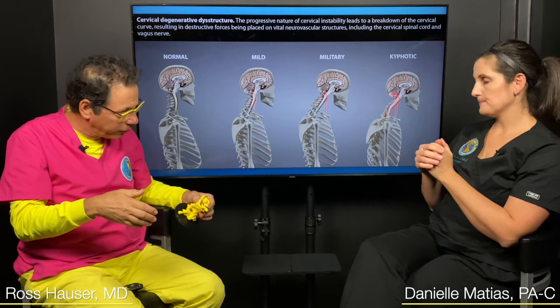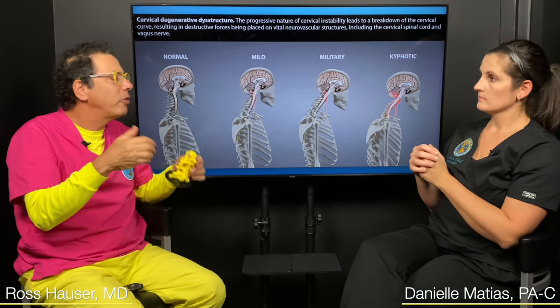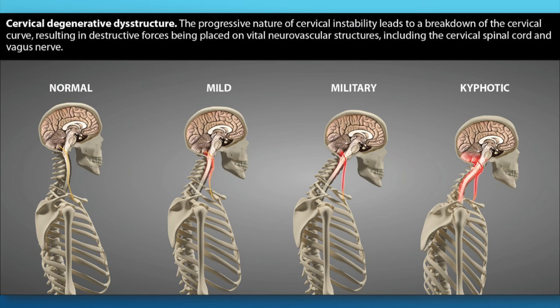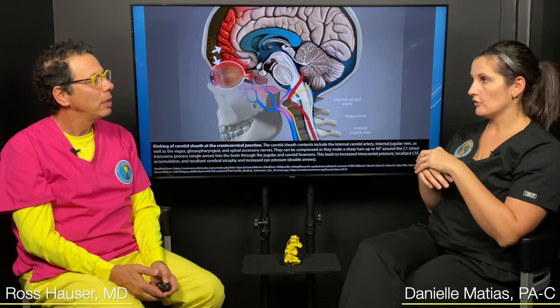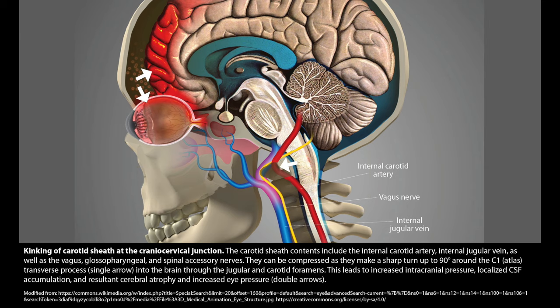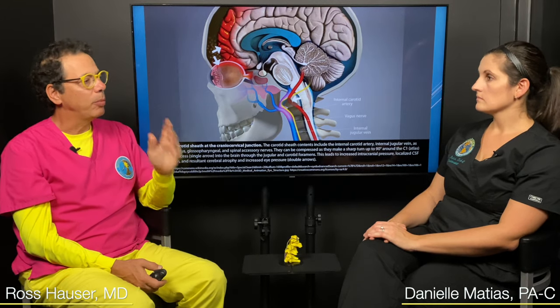When your cervical curve is compromised, C1 and C2 have to hyperextend. If the curve is reversed, C1 and C2 have to compensate, making them more prone to being unstable. If they're unstable, you get all the various symptoms of upper cervical instability. Besides burning mouth and burning tongue, you can get jugular vein compression, which causes intracranial hypertension — basically increased pressure in your brain — and also vagus nerve problems. So what would be the treatment?